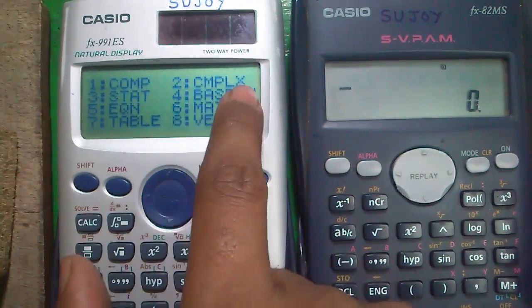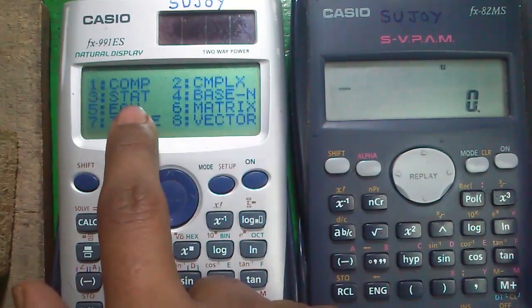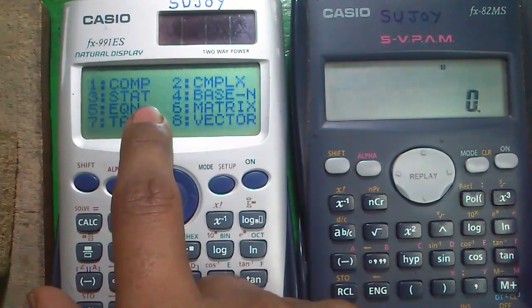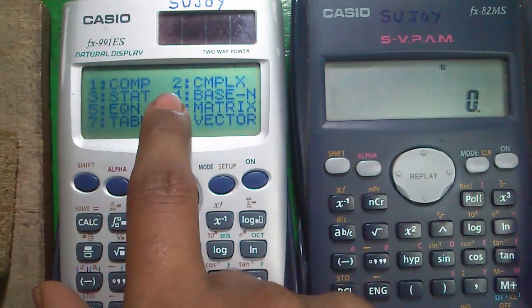In base-N mode, you can convert from binary to decimal, hexadecimal, octal, etc. In equation solver mode, you can solve linear simultaneous equations, systems of three linear equations, quadratic equations, cubic polynomials.